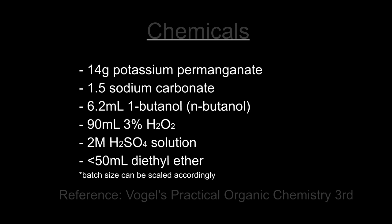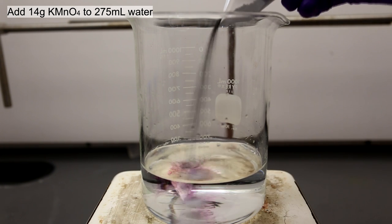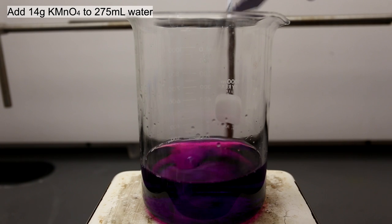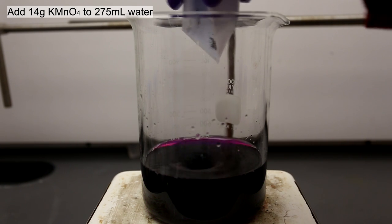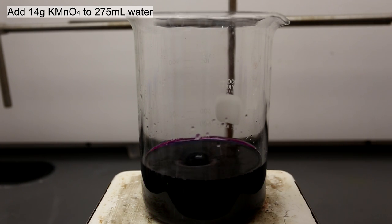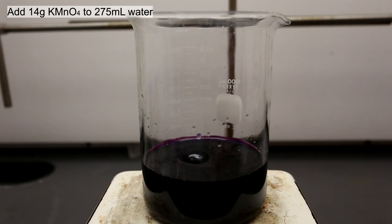This procedure is adapted from the isobutyric acid synthesis procedure found in Vogel's Practical Organic Chemistry 3rd Edition. First, add 14 grams of potassium permanganate to about 275 milliliters of water. To fully dissolve all the KMnO4, you might need to warm the solution a little.